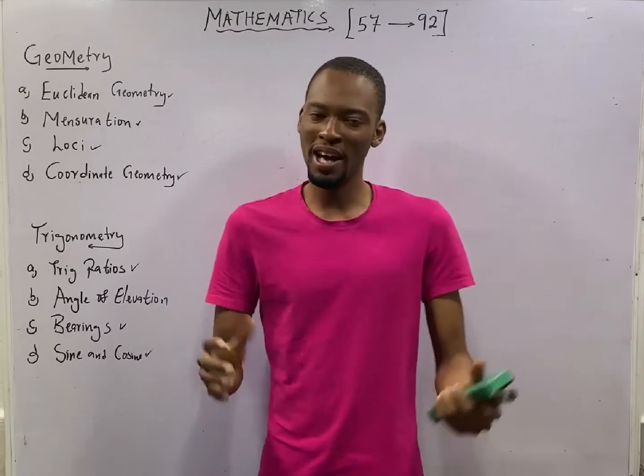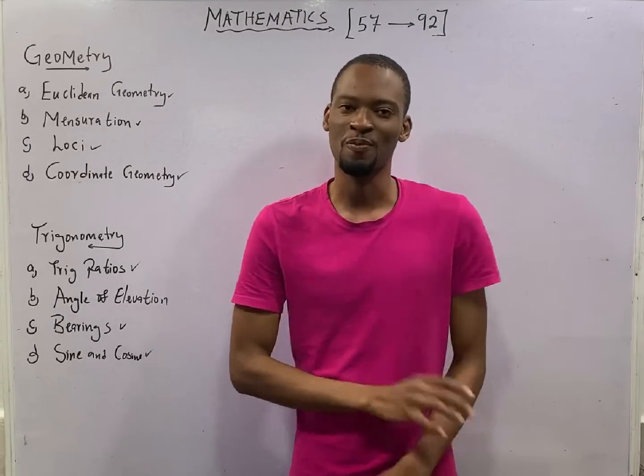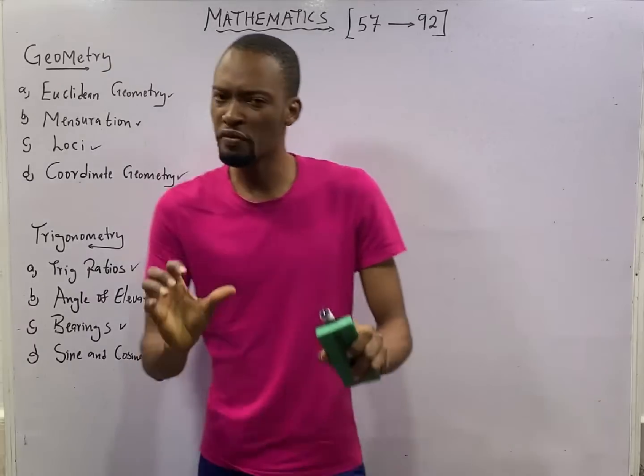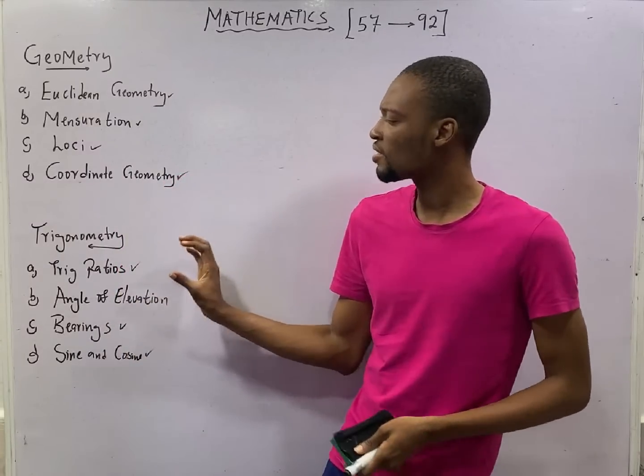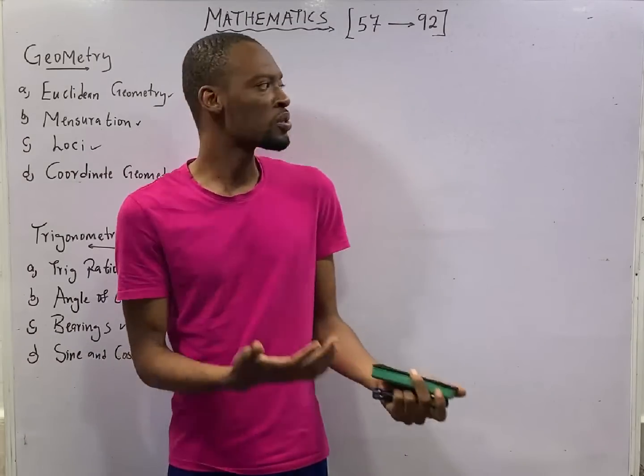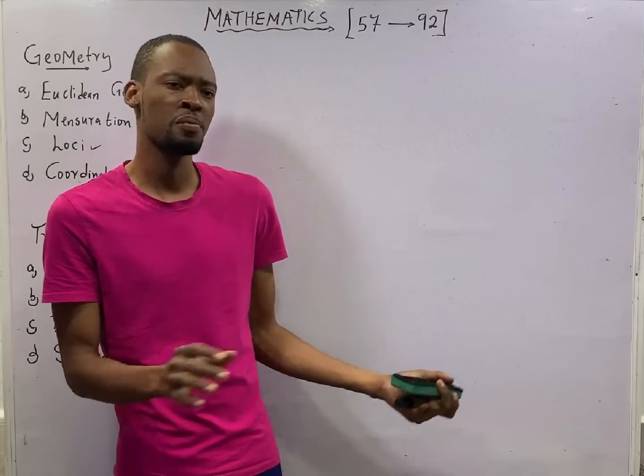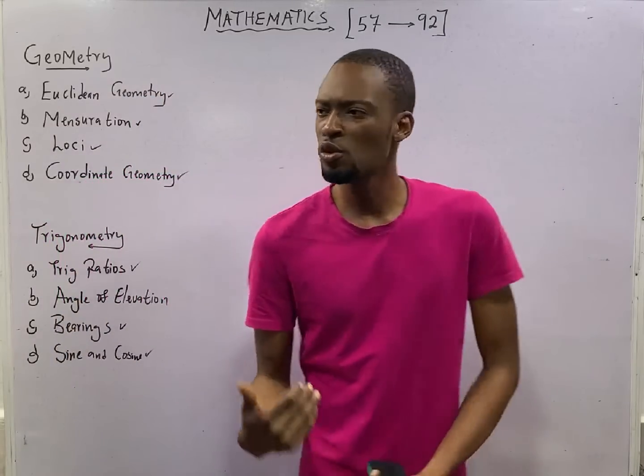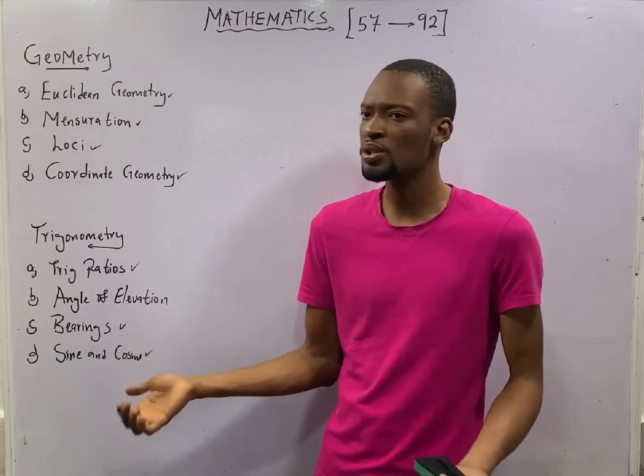This is episode number 85 of the 120 Days to Jam Mathematics with Flash Isaac. In this episode, we shall be officially saying bye-bye to Geometry and Trigonometry. I noticed that the more we solve questions, the more the questions begin to look familiar. And I have also realized that from what you have learned so far, if you go over them many times, you should be able to solve as many questions as possible.